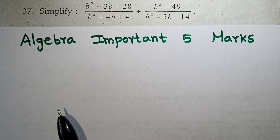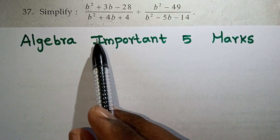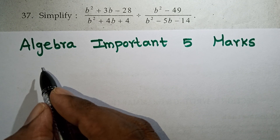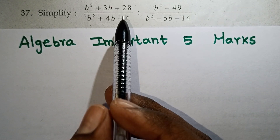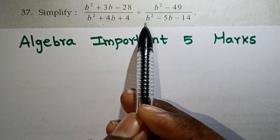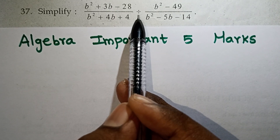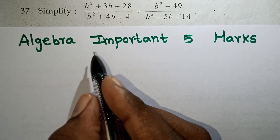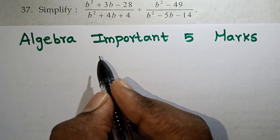Now we will do the 5 marks. The first question is to simplify b squared plus 3b minus 28. There are 4 quadratic equations in square terms. The question involves division, so the sum is to be multiplied by reciprocal.